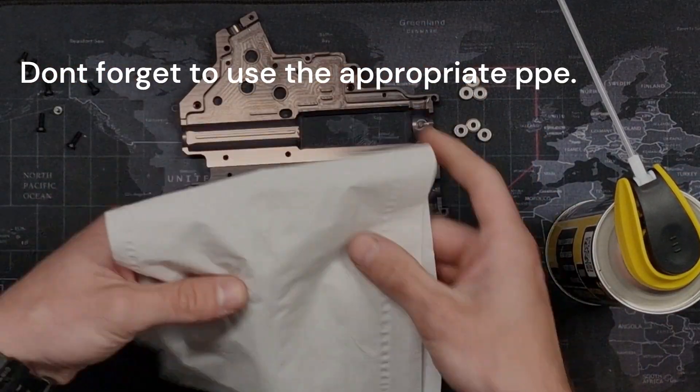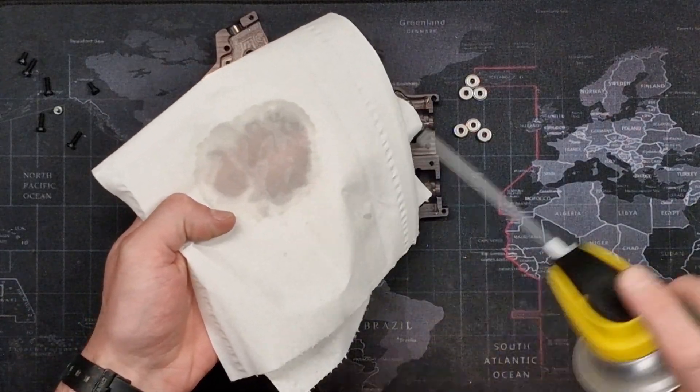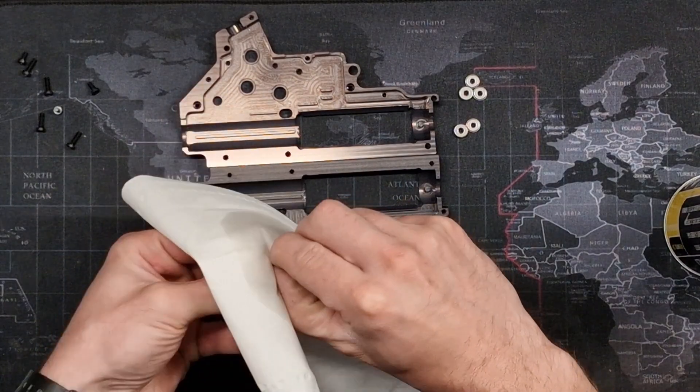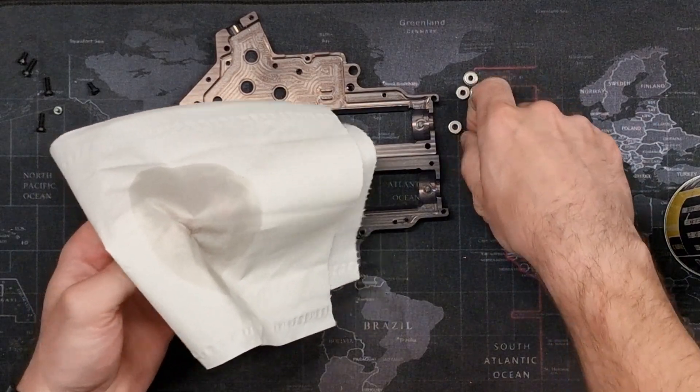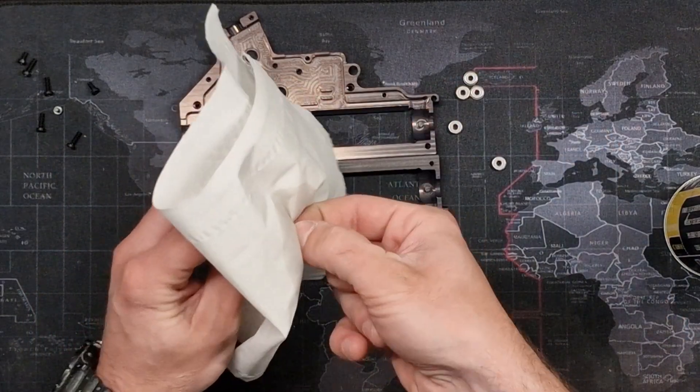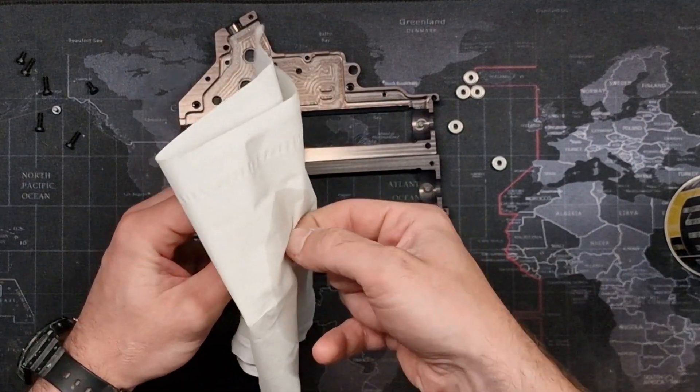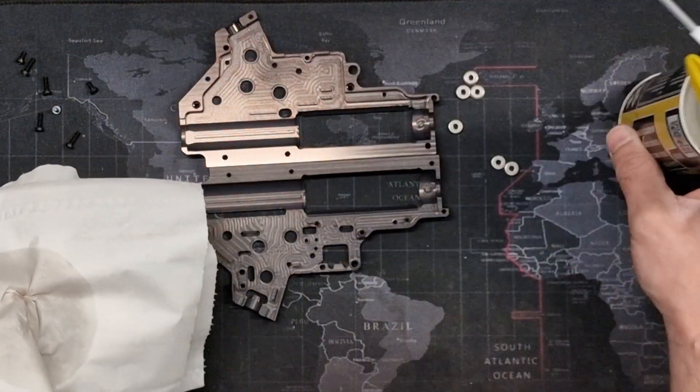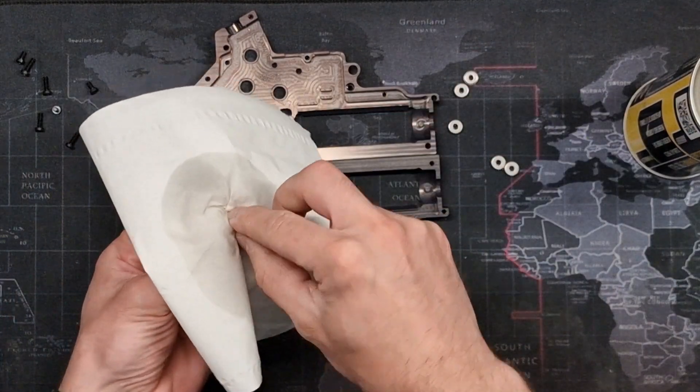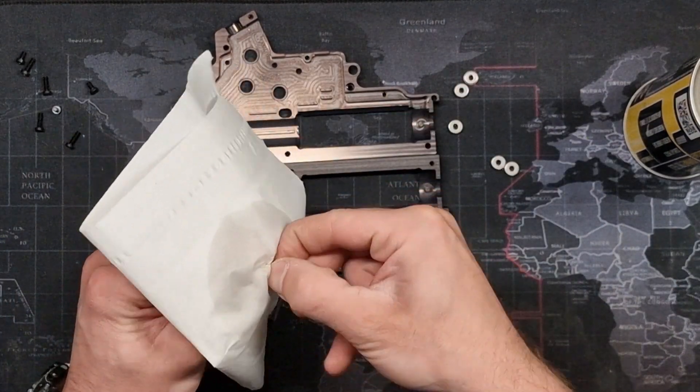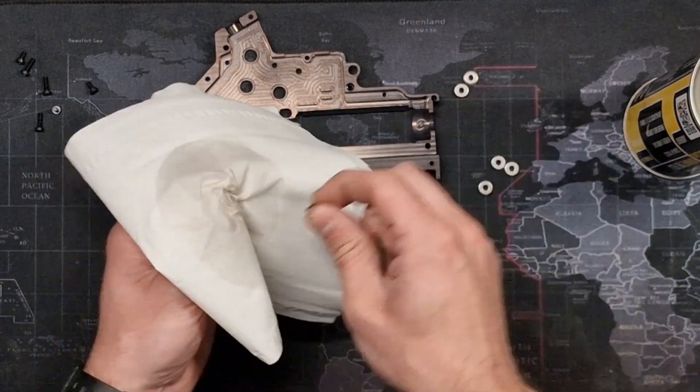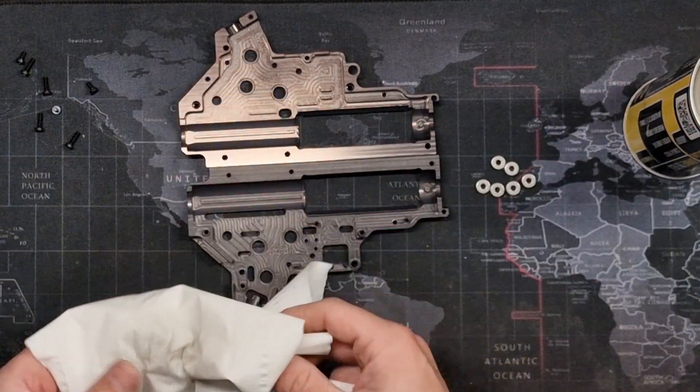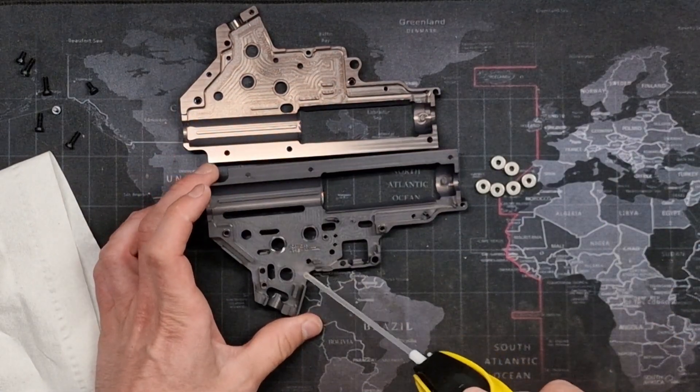I'm going to use a bit of lint-free towel, spray a bit of degreaser on, and give it a good clean. Thankfully these aren't really greasy in the first place, but sometimes they will be, especially if it's a gearbox you just opened with the intention of reshimming. I always recommend giving it a good degrease. You can use a specific degreaser like this one from Nuprol, or you could use isopropyl alcohol or something like that to attack the grease and get it shifted.